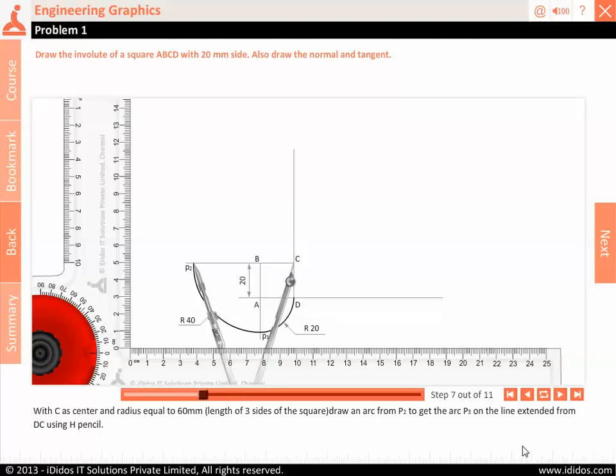With D as center and radius equal to 80 mm, length of four sides of the square, draw an arc from P3 to get the arc P4 on the line extended from DC using H pencil.